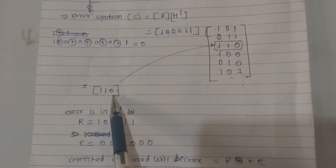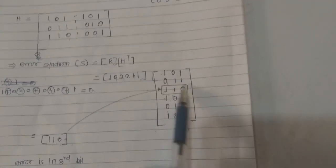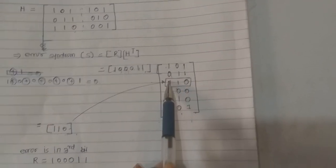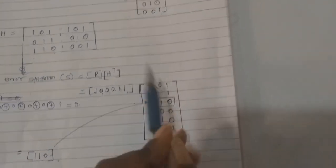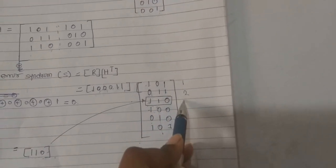The answer comes 1, 1, 0. It matches with the third column, third row of the H transpose matrix. H transpose matrix is this. So third position: 1 first position, second position, third position.